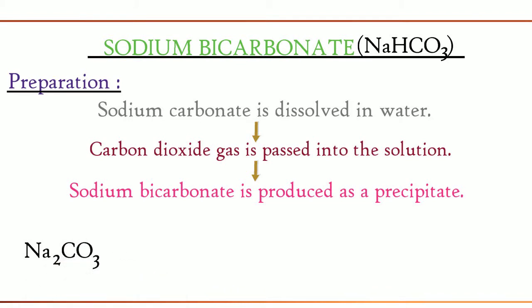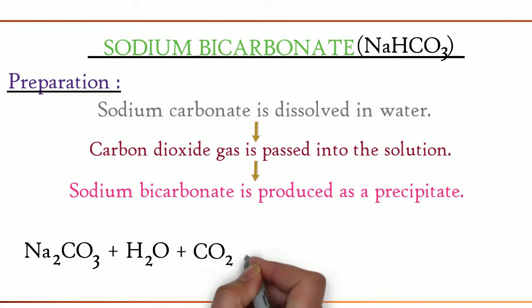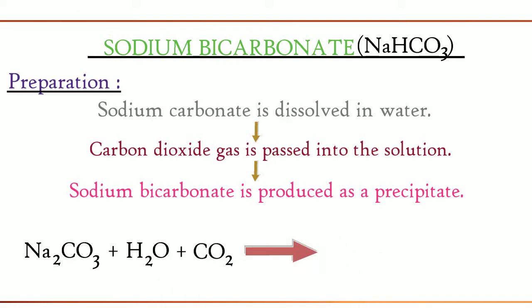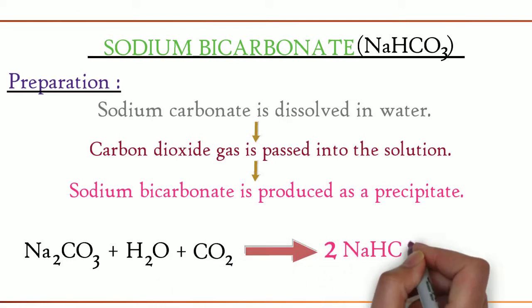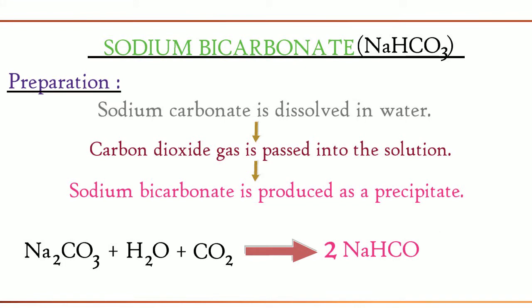The equation is as follows: Na2CO3 + H2O + CO2 gives 2 NaHCO3.